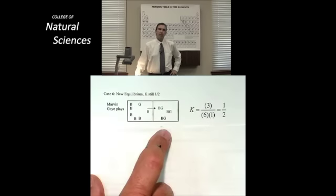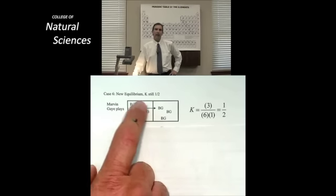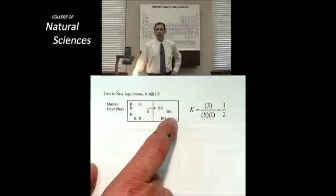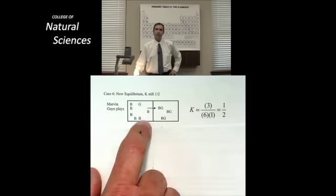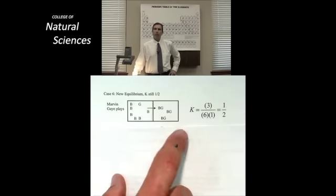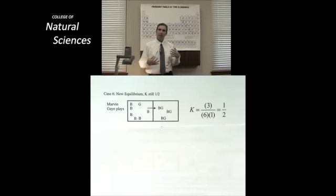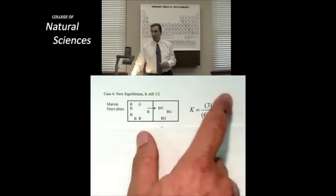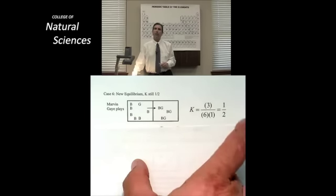Well, if I can get one more boy-girl couple to head over to the right-hand side, I now end up with three in the back room. And I've got, what have we got? One, two, three, four, five, six boys in the front room and one girl. Even though my concentrations are completely different than they used to be, because I've got a lot more boys at the party than I used to have, because K has to stay at a half, I've found some new combination of these. It's no longer two over two times two to get a half. Now it's three over six times one to make a half.